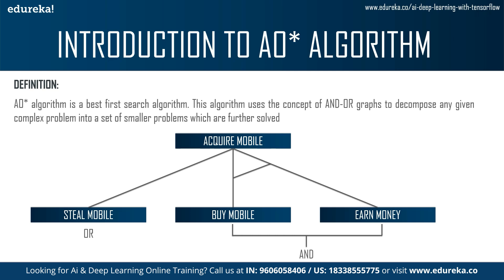The way it breaks down the problem is by constructing an AND-OR graph. For example, the first node is 'acquire mobile.' You can do this by stealing a mobile, or you can earn money and then buy a mobile. The lines connecting 'buy mobile' and 'earn money' together represent an AND condition — both activities must be completed together. This is called a hyper arc. So you have a simple arc to 'steal mobile' and a hyper arc for 'earn money AND buy mobile.' This is why we call it an AND-OR graph.